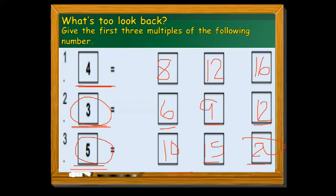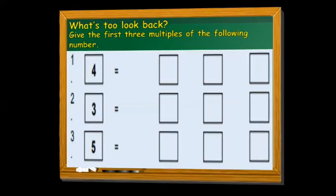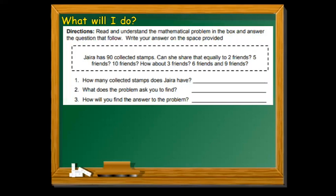This exercise will help us find more quickly which numbers are divisible by 2, 3, 5, 6, 9, and 10. So let's answer this exercise now. Direction: Read and understand the mathematical problem in the box and answer the questions that follow. Write your answer on the space provided. Here we can read about the divisibility of 2, 5, 10, 3, 6, and 9.